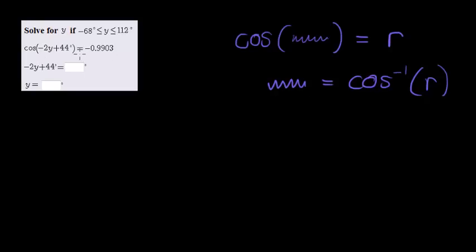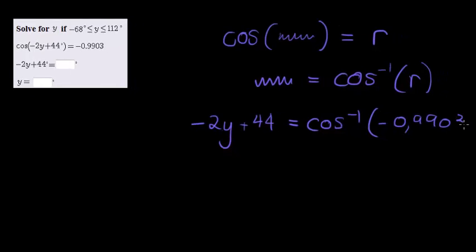Now, all we need to do now is say, okay, well, now that means that this interior here, that negative 2y plus 44, is going to equal our inverse angle. So let's calculate that. That means it's equal to arc cos of negative 0.9903.